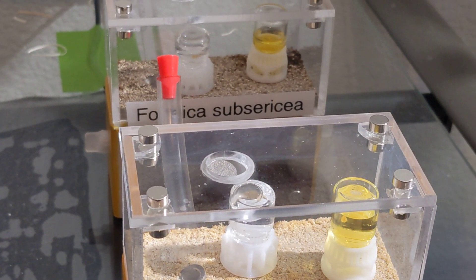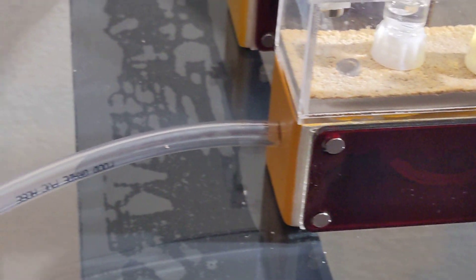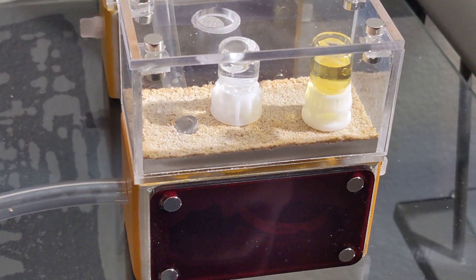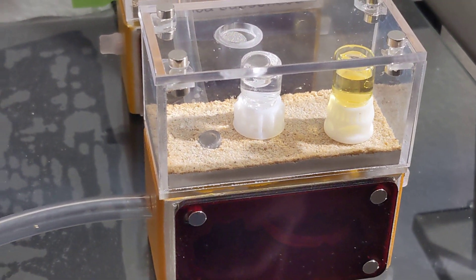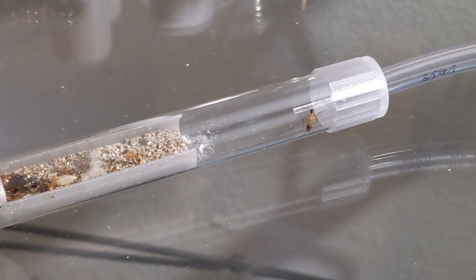But what I want to know is, does the Formica require more heat or does this Camponotus require more heat? And again, I believe this is Camponotus sansabeanus. So please, if you happen to know the answer, comment and let me know.